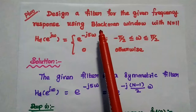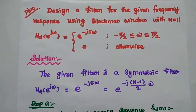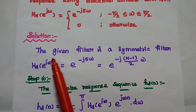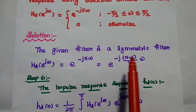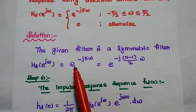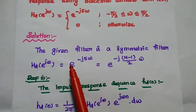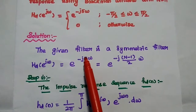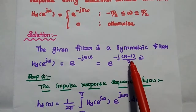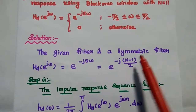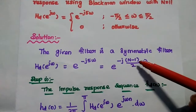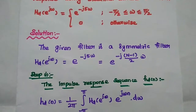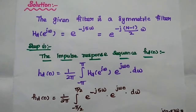Here we are going to use the Blackman window method to design a filter. In the solution part, we have to consider the given filter is a symmetric filter because the frequency response has the value e^(−j5ω). Thus 5 is nothing but (N−1)/2. So here N value is 11, and 11 minus 1 by 2 equals 5. So the given filter is a symmetric filter.